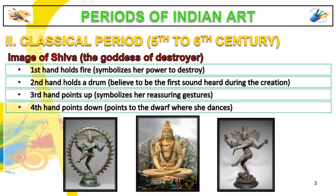Classical Period, 5th to 6th centuries. The image of Shiva the destroyer develops into Shiva the cosmic dance, the four-arm figure, where one hand holds the fire with which he destroys, another holds a drum which is the first sound heard in the world at birth. The third arm points up in a reassuring gesture and a fourth points down to the dwarf on which he dances.